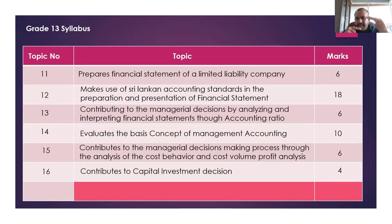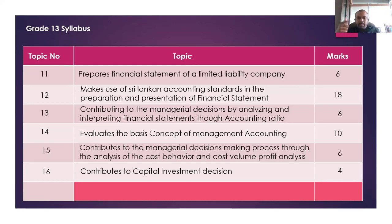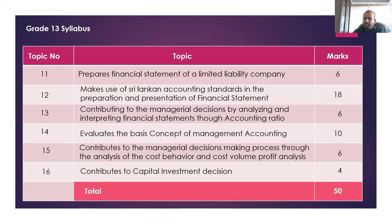Topic 14 — 10 marks, Topic 15 — six marks, Topic 16 — four marks. So you will get three questions from capital budgeting and two questions from other areas. In total, again it's 50 — they are giving equal weightage for both papers. That is what we can identify.